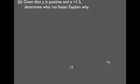Given that y is positive and x is 1.5, determine who ran faster. Explain why.